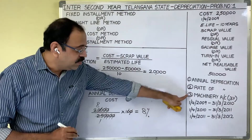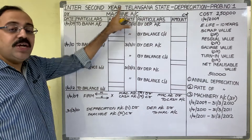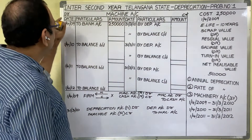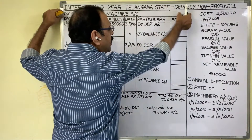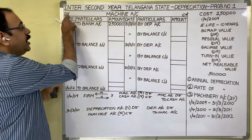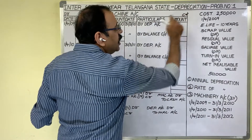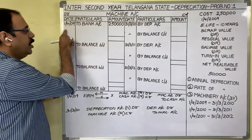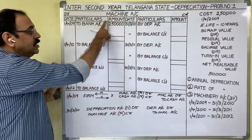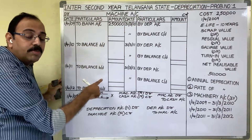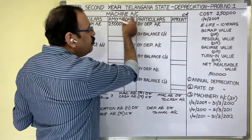Now the third part: we have to prepare the machine account. The account is divided into two parts — the left side is known as the debit side and the right side is called the credit side. To indicate the debit side we write DR, and for the credit side we write CR. The debit side has columns for date, particulars, and amount; there is also a JF (General Folio) number column, which you can omit. The credit side has the same columns.